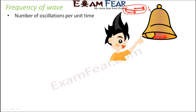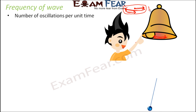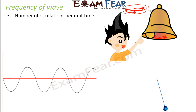If the ball is moving very slowly, maybe it will cover two oscillations in one second. If it is moving very fast, it might cover 20 oscillations in one second. So how many oscillations it covers in a particular period of time — that is called frequency. The same applies to a pendulum.